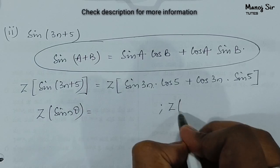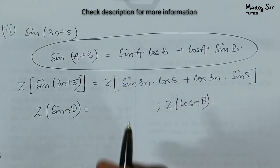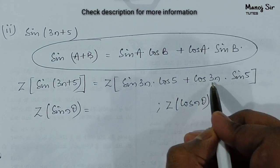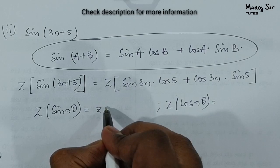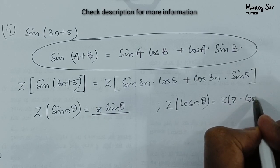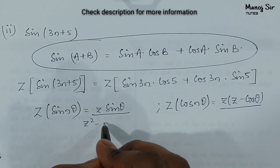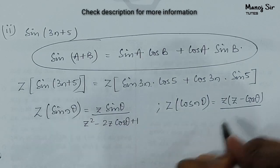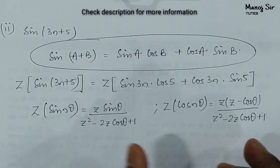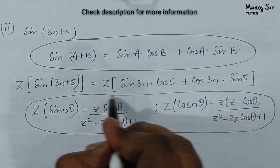We must have the formula for Z-transform of sin(nθ), which is z·sin(θ) / (z²−2z·cos(θ)+1), and Z-transform of cos(nθ), which is z(z−cos(θ)) / (z²−2z·cos(θ)+1). Both have the same denominator. Here theta equals 3.